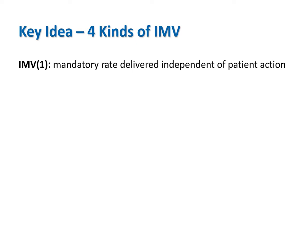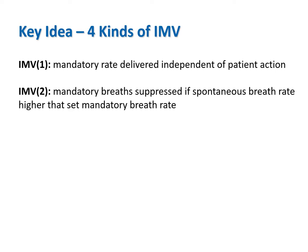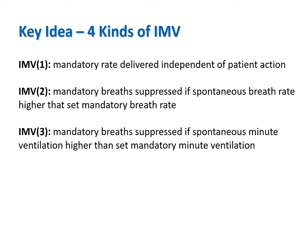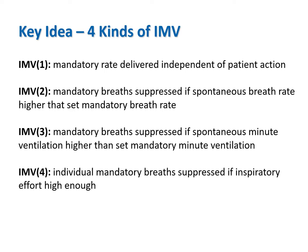IMV type 1 is the legacy form in which mandatory breaths are delivered at the set rate no matter what the patient wants. IMV type 2 allows the patient to suppress mandatory breaths—which are less comfortable—by simply triggering spontaneous breaths at a higher rate than the set mandatory breath rate. IMV type 3 allows the patient to suppress mandatory breaths only when the minute ventilation due to spontaneous breaths is higher than the target minute ventilation from mandatory breaths. IMV type 4 allows the patient to turn a volume-controlled mandatory breath into a spontaneous pressure support breath if the inspiratory effort is large enough.